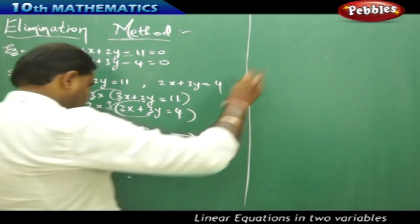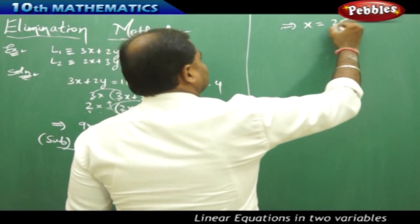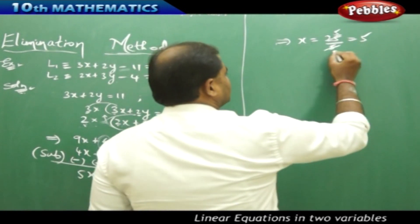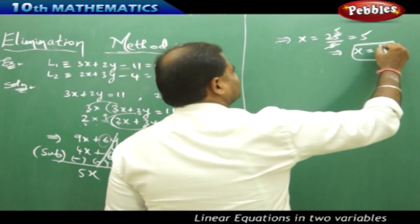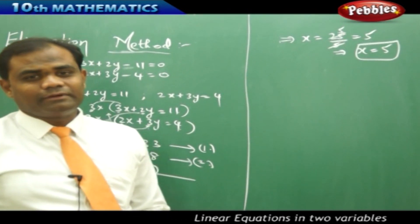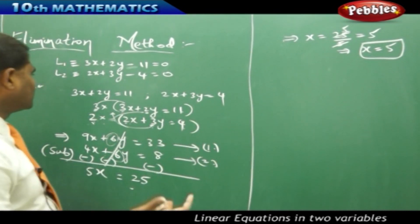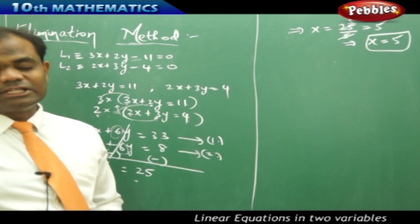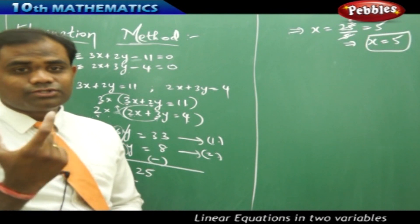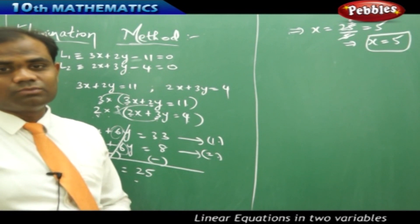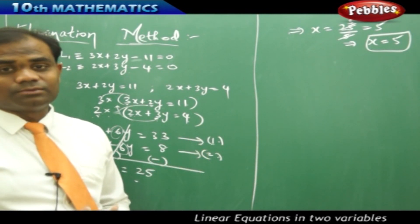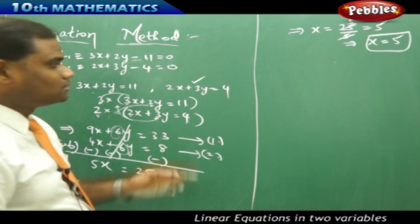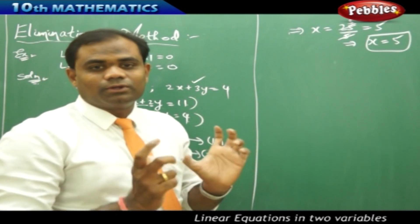Proceeding: 5x equals 25 implies x equals 25 over 5, which is 5. Therefore, the value of x is 5. Now to find y, I substitute x equals 5 into one of the equations. I choose the simpler equation — always choose the equation with smaller values to avoid time-consuming simplification. The equation 2x plus 3y equals 4 looks simpler.